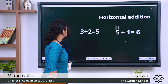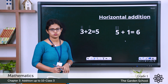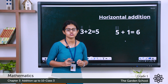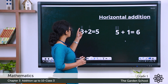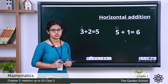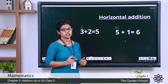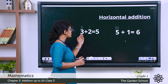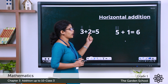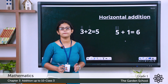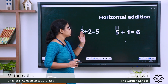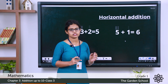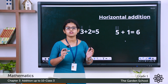One more example: 3 plus 2, written horizontally. For number 3, draw 3 lines: 1, 2, 3. Then add 2 lines for number 2. Counting on: 3, 4, 5 — it gives you a total of 5. So in horizontal addition, you write numbers side by side and then add the numbers together.